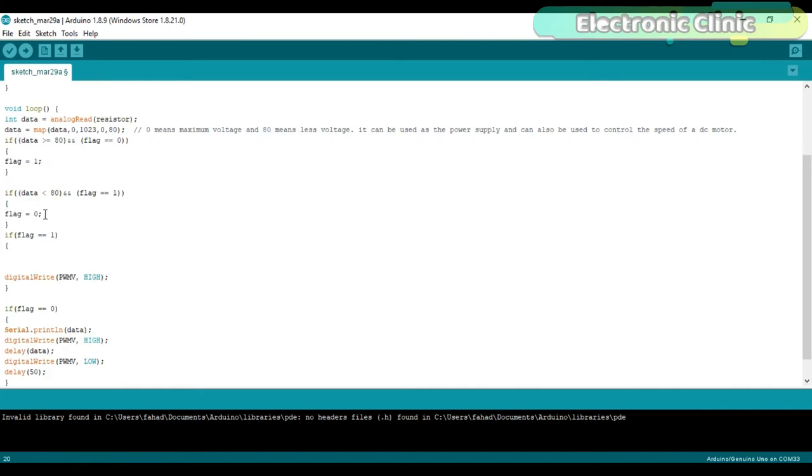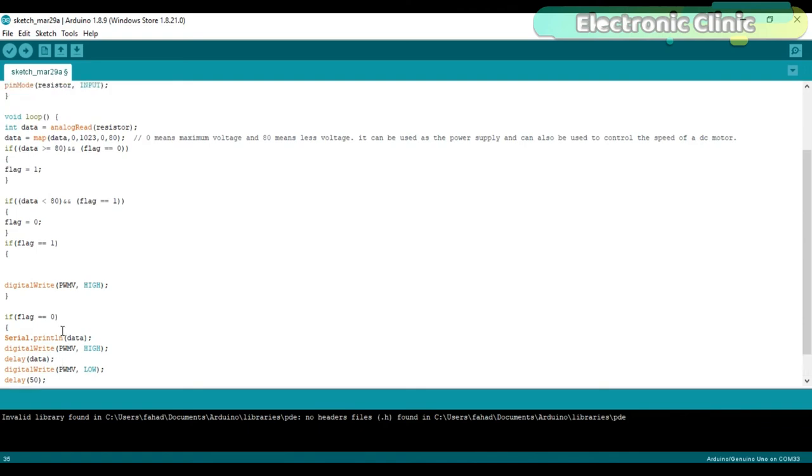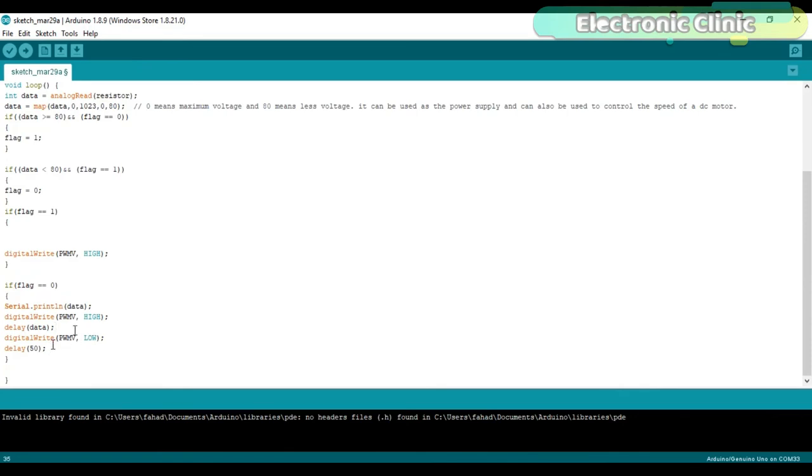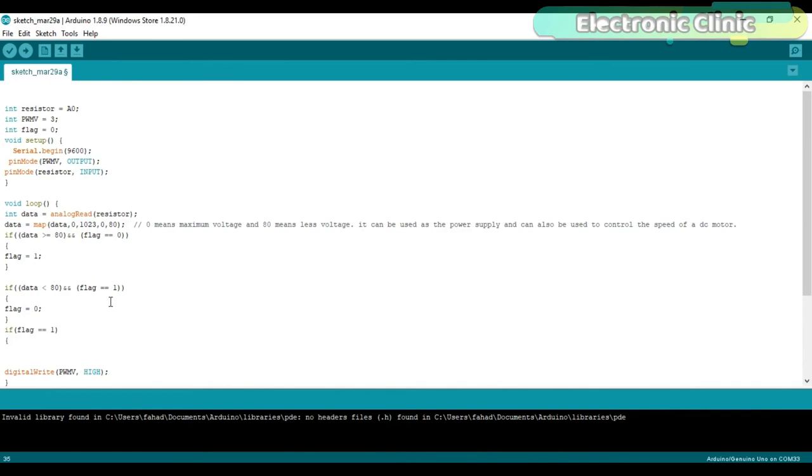Now depending on the flag status, we turn off or turn on the supply. So if flag equals 1, then turn off the supply. High means off. If flag equals 0, then turn off and turn on the PWMV pin using the variable resistor mapped value as the delay. So by rotating the knob of the variable resistor, we can change the delay. As the delays are in milliseconds, the MOSFET gets enough time for cooling when in off state. This program can be downloaded from my blog page. I have already uploaded this program. Let's watch this project in action.